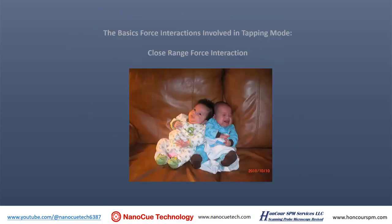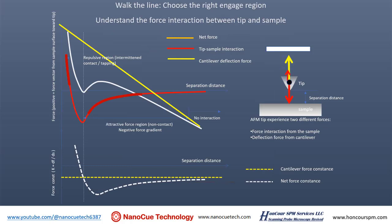Tapping mode is based on close-range force — basically the repulsive force. That's because you cannot put two objects into the same space; they start to repulse each other. That's the basics of tapping: the tip and sample start to repulse each other. Here are some simplified drawings of tip-sample interaction. We focus on the red line — you have attractive force and then repulsive force.